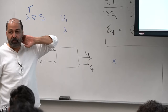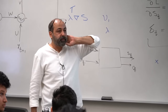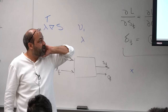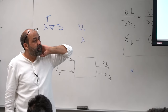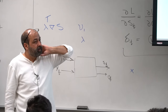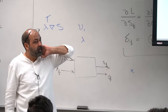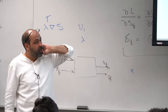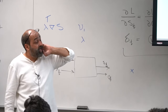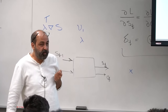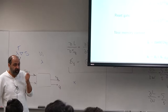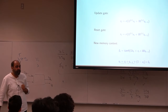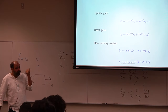We calculate S_T in the forward pass, not in the backward pass. In the forward pass, you compute S_{t-1}, S_t, S_{t+1}, and so on. In the backward pass, you are only updating the weights.